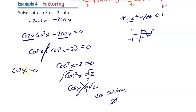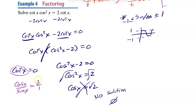Now for cotan(x) = 0: cotan is cosine x over sine x, and that equals 0 when the numerator is 0, so we're really just solving cosine x = 0. You can cross-multiply to confirm: 0 = cosine x.